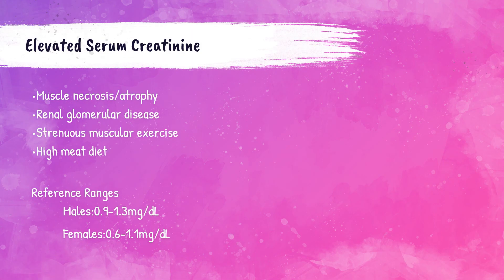The normal reference range for creatinine in an adult male is 0.9 to 1.3 milligrams per deciliter. Females, due to generally lower muscle mass, have a normal adult reference range of 0.6 to 1.1 milligrams per deciliter. Elevated creatinine levels are generally indicative of renal glomerular disease, but levels can also be elevated with necrosis or atrophy of the muscles, strenuous exercise, or in patients with a very high meat diet.